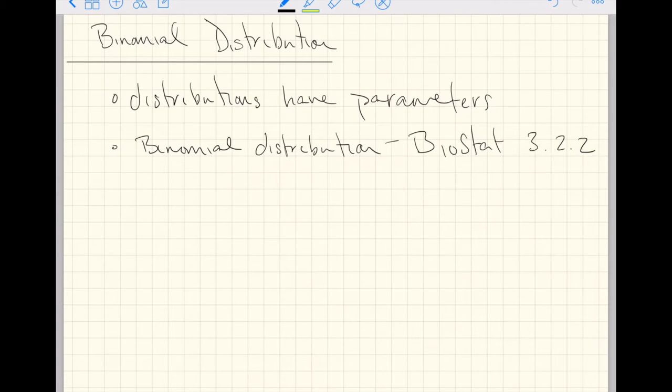If you want a good reference for the binomial distribution, I recommend section 3.2.2 of our textbook Biostat. You don't so much need the formulas in this class so much as you need the idea of what this distribution is doing.